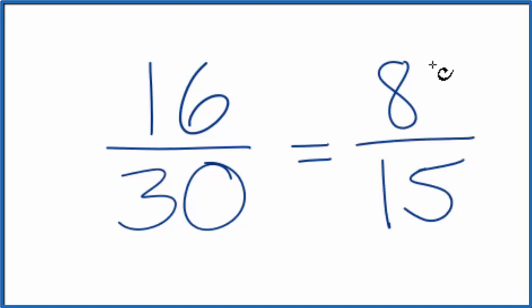At this point we can't simplify this any further. We can't reduce 8 fifteenths down any further. So this is our simplified fraction for 16 30ths.